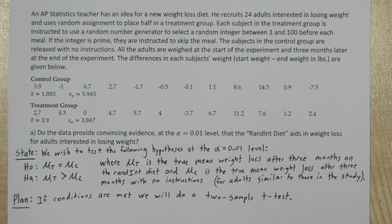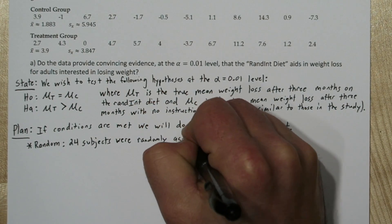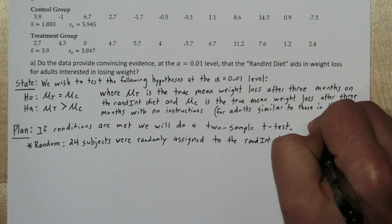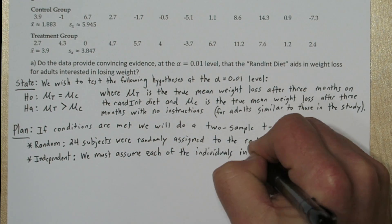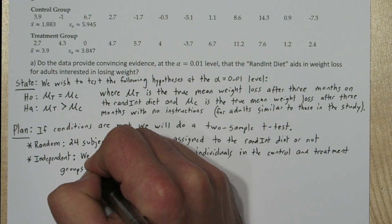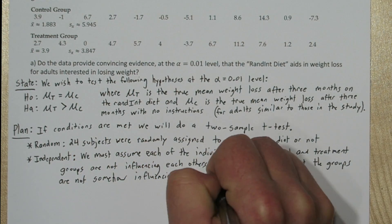Now let's check conditions. Our random condition is met because the 24 subjects were randomly assigned to the Randon diet or not. For the independent condition, we must assume that each of the individuals in the control and treatment groups are not influencing each other's weight loss, and that the groups aren't somehow influencing each other.